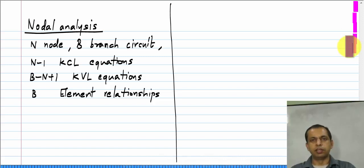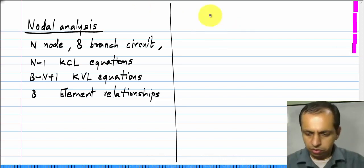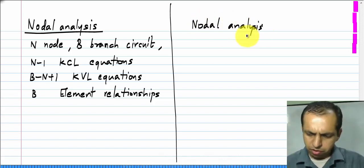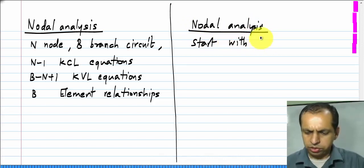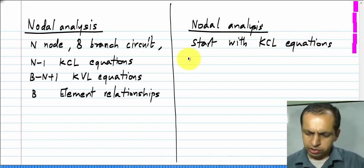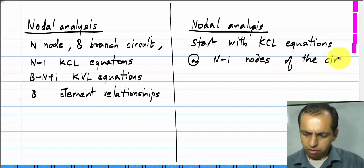We will see those things later, we will first consider the nodal analysis. So, you start with KCL equations at n minus 1 nodes.